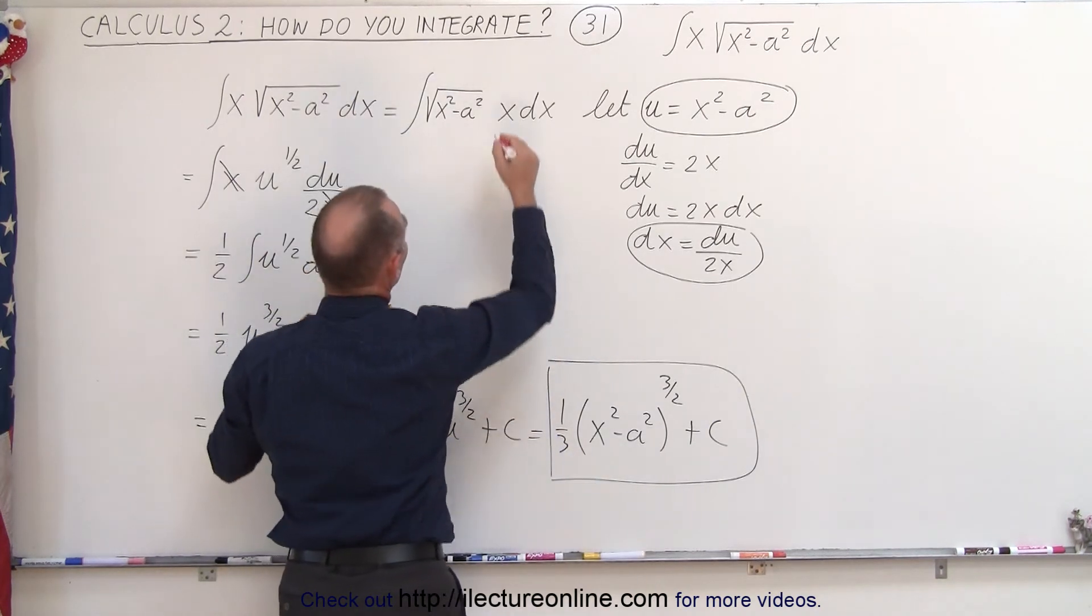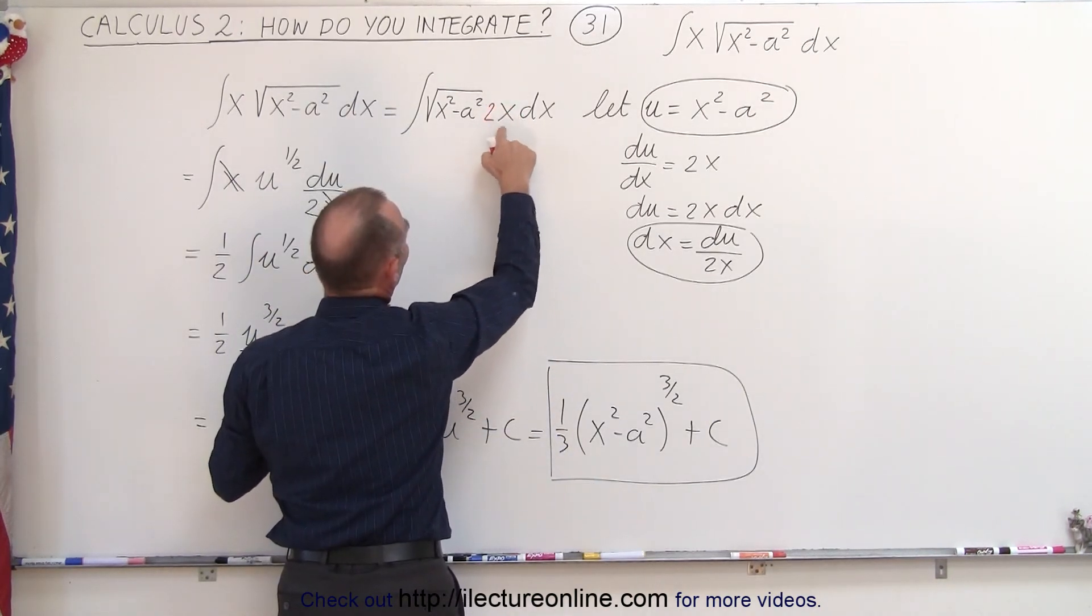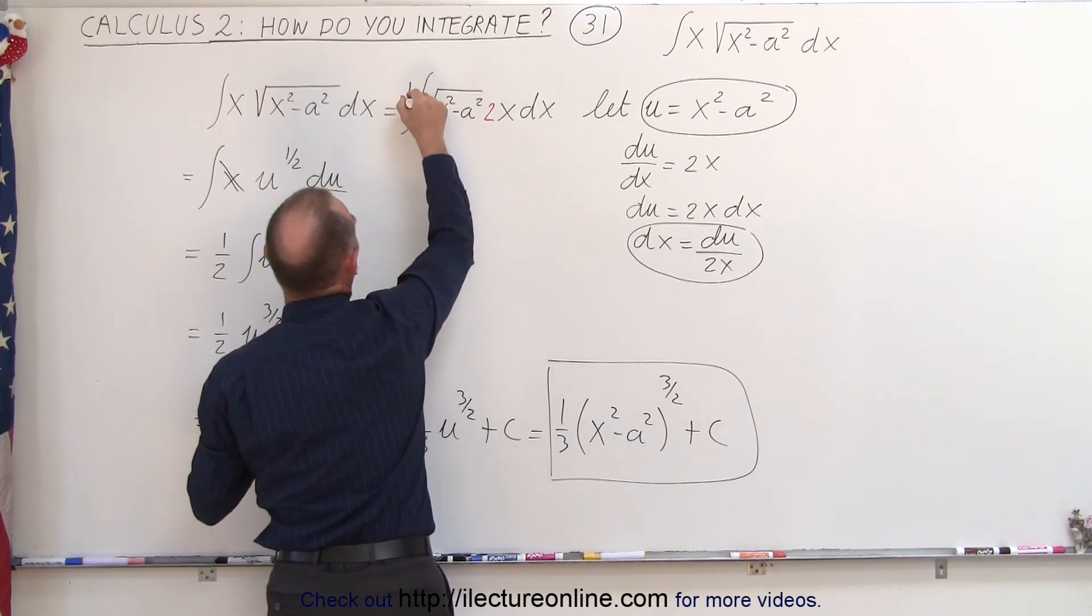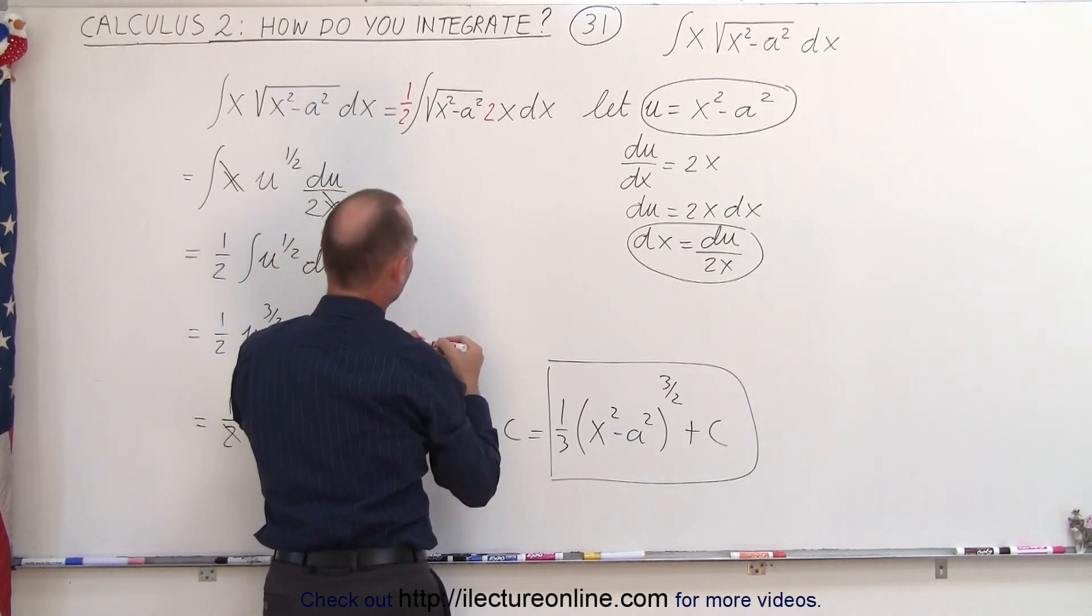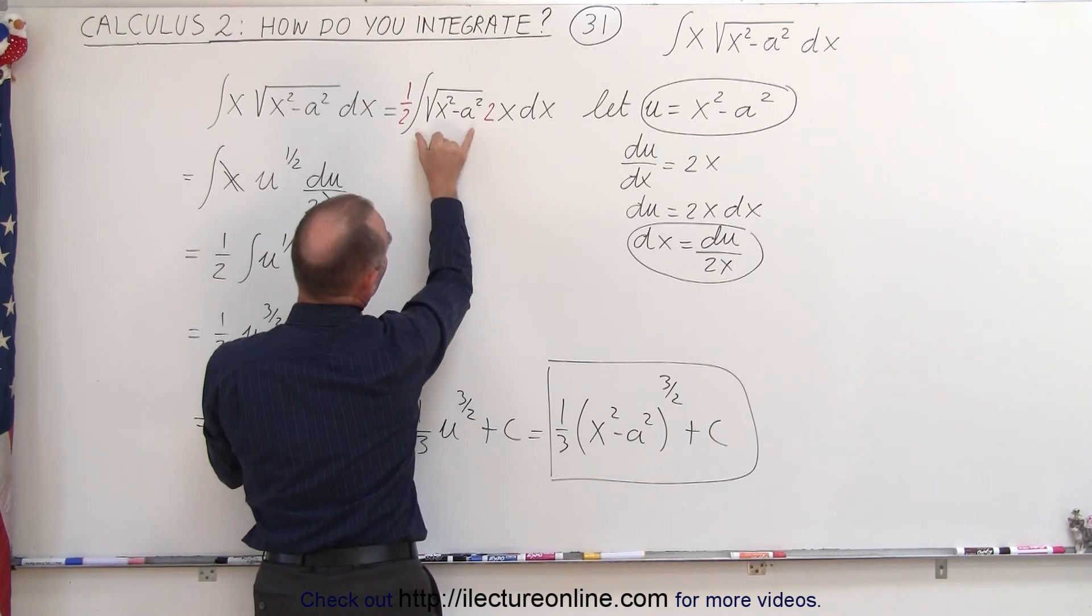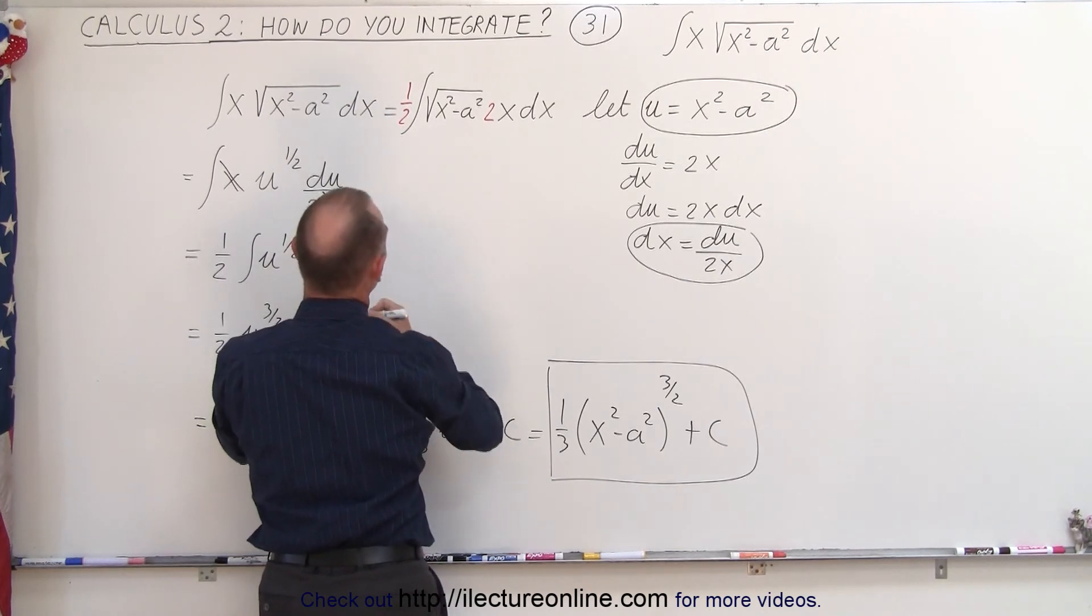So I'm going to multiply this times 2, so we end up with a 2x dx, and then I have to divide by 2 in order to compensate for what I just did. And then you can say, okay, now I can integrate this.